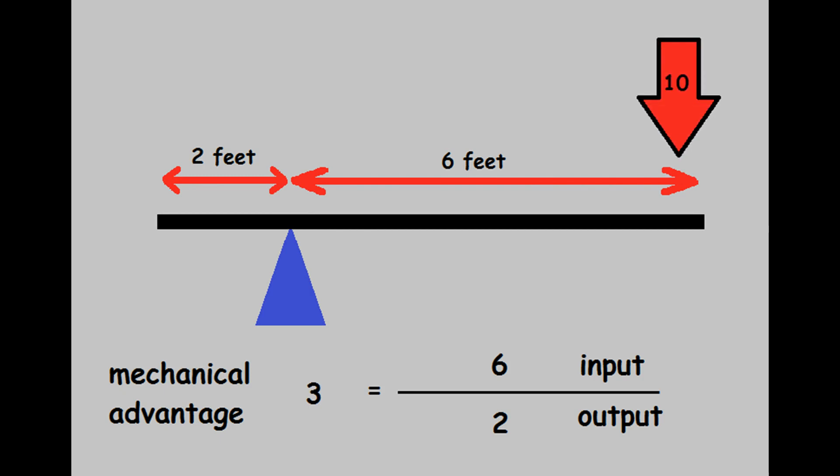To better illustrate this, let's move the fulcrum one more time. Now the input arm is 6 feet, the output arm is 2 feet, resulting in a mechanical advantage of 3. This means a 10-pound push will lift 30 pounds. Now, how does knowing this help us?